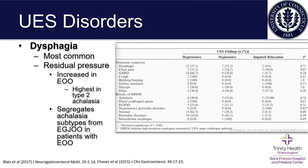Dysphagia is the most common presenting symptom of upper esophageal sphincter disorders. Looking at manometric readings — specifically residual pressure — we see that residual pressure is increased in esophageal outlet obstruction, particularly highest in type 2 achalasia. It segregates achalasia subtypes from EGJ outlet obstruction. In patients whose dominant symptom is dysphagia, the largest portion show a hypertensive sphincter on manometry. This is also true in patients with GERD or hiccups, so it is not specific, but it is the most common UES presentation.